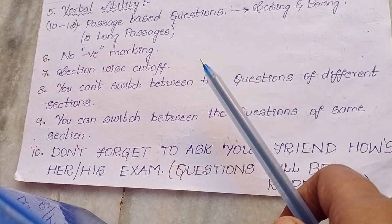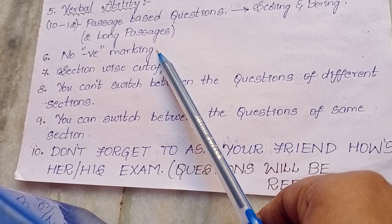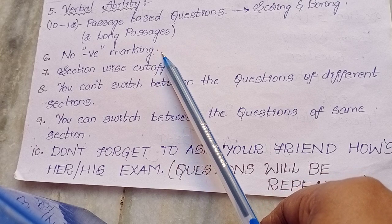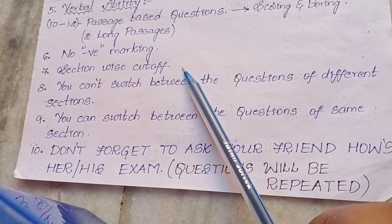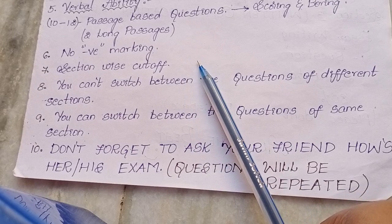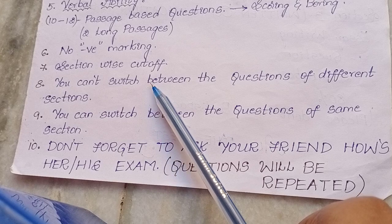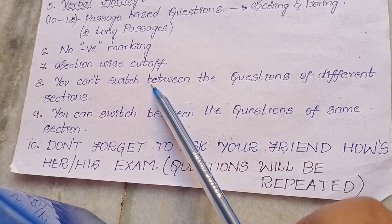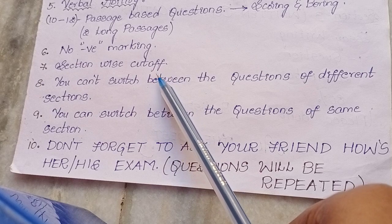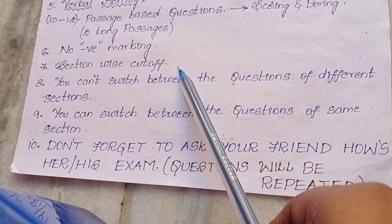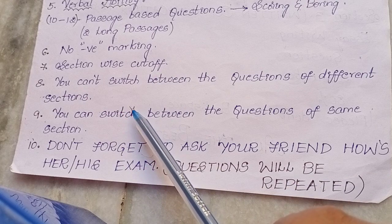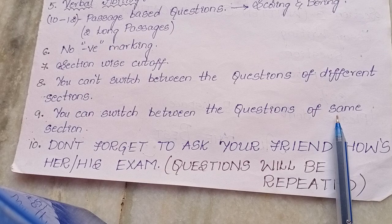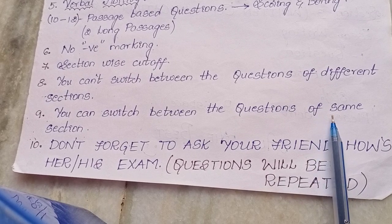The most important thing is there is no negative marking. Even if you don't know any question, please make sure that you keep answering those questions. Also, there is section-wise cut-off in Wipro Allied National Level Talent Hunt, so please make sure that you perform well in each and every section. You cannot switch between questions of different sections — you can't skip from quantitative aptitude to reasoning. But you can switch between questions within the same section.